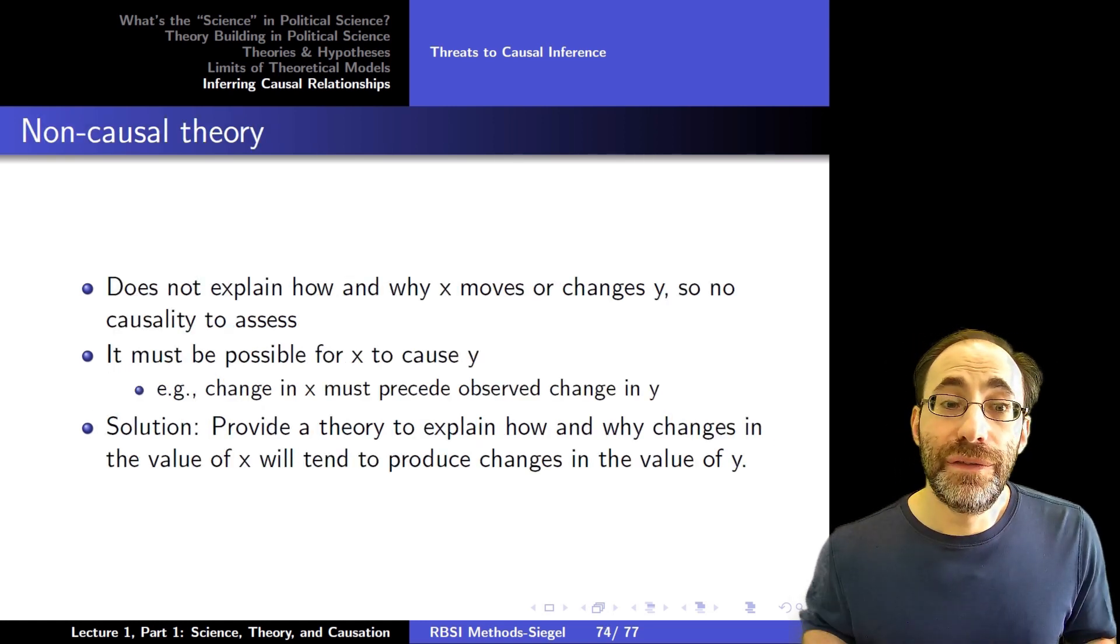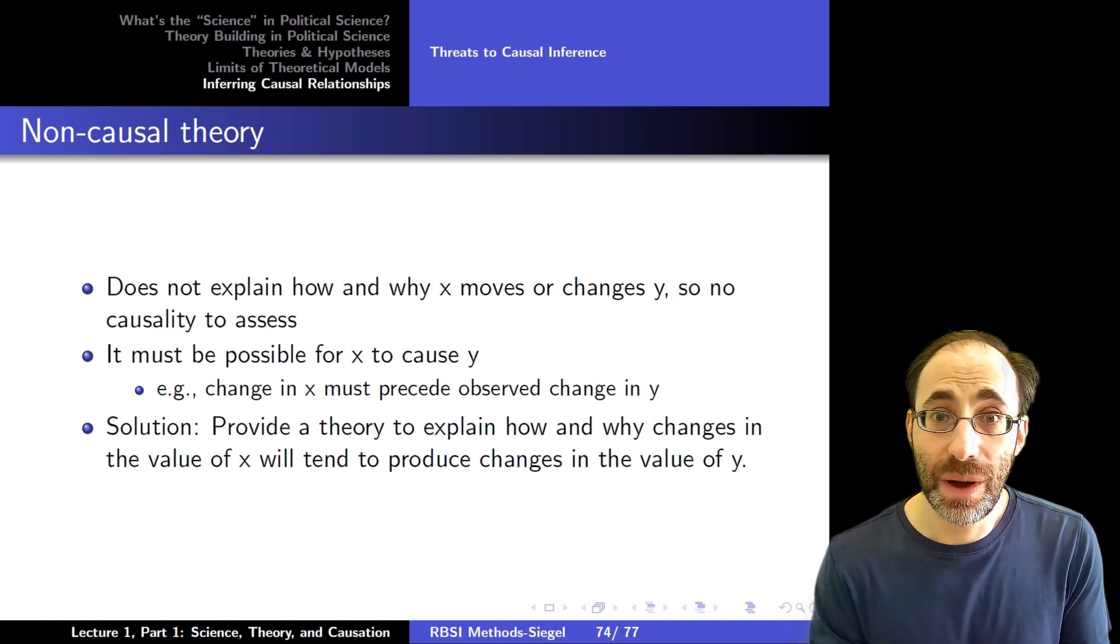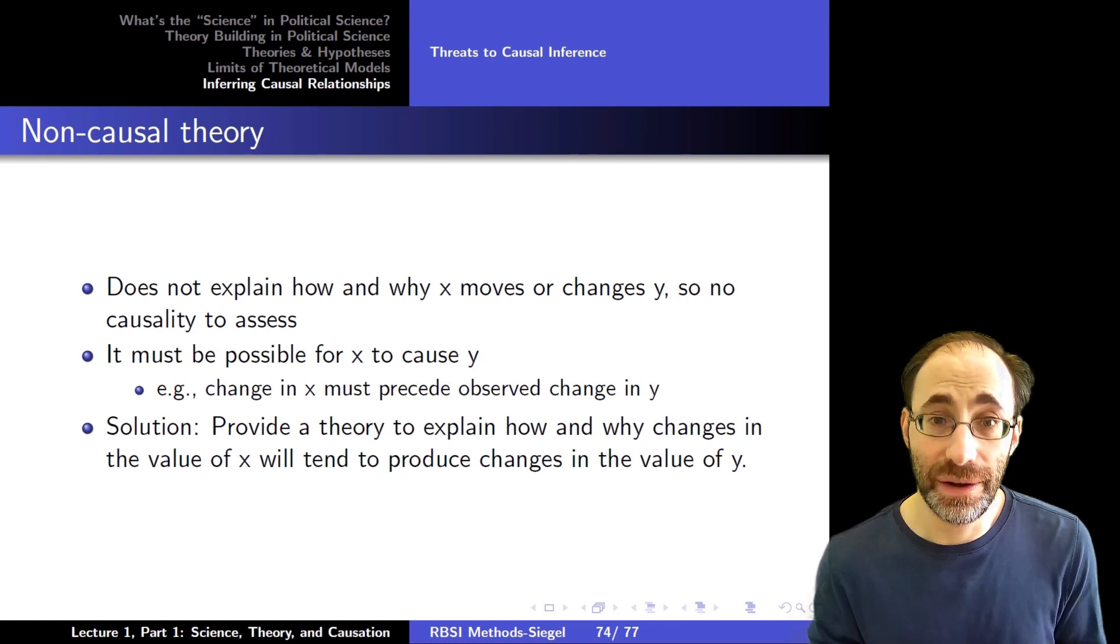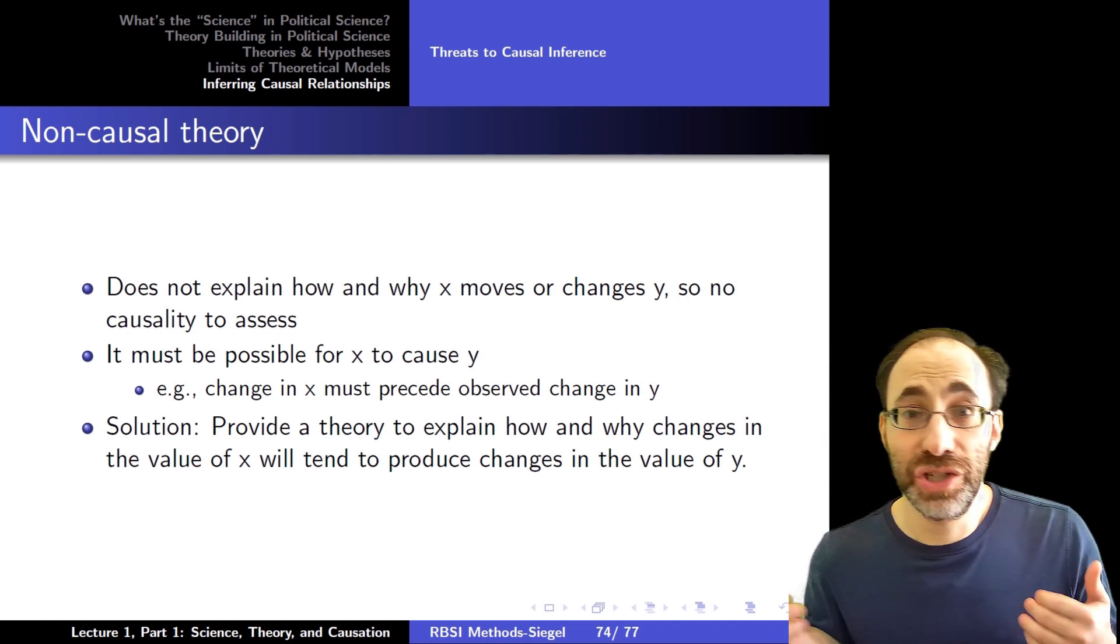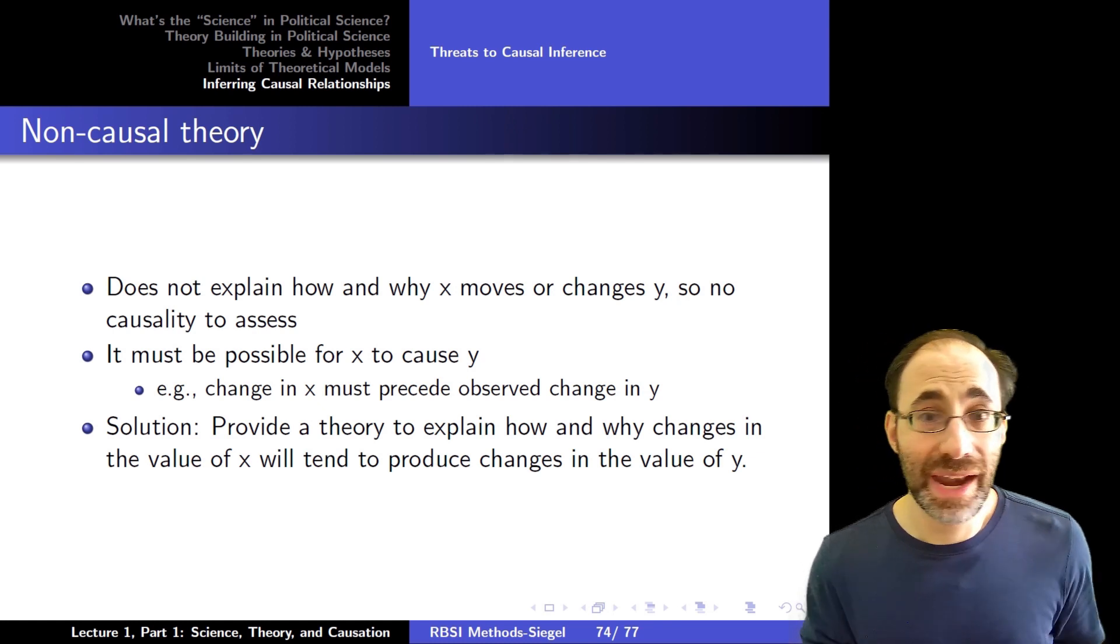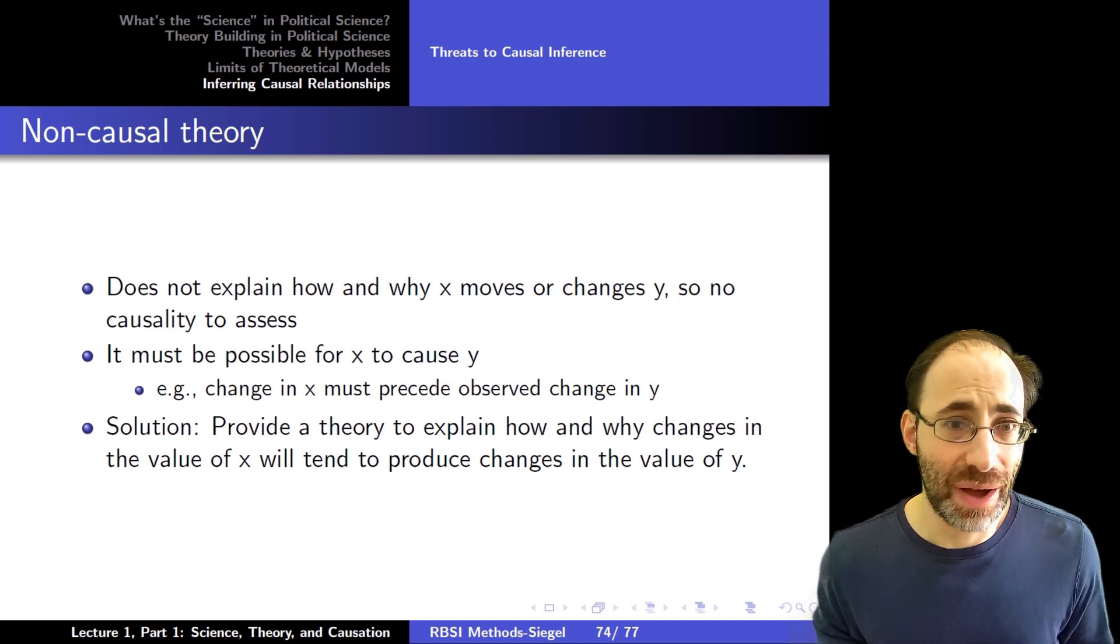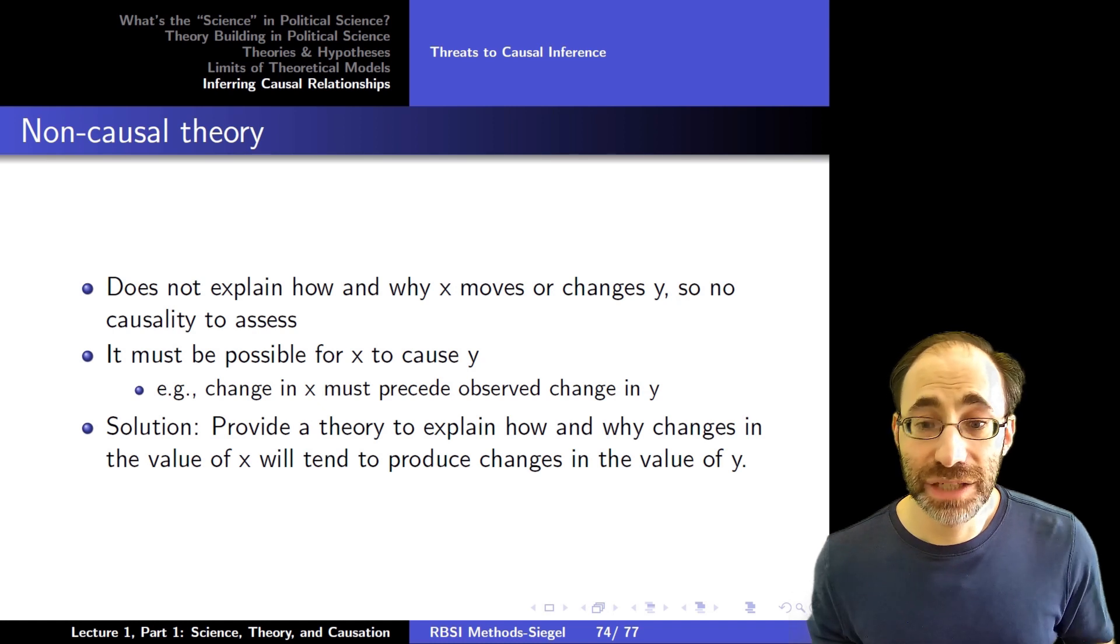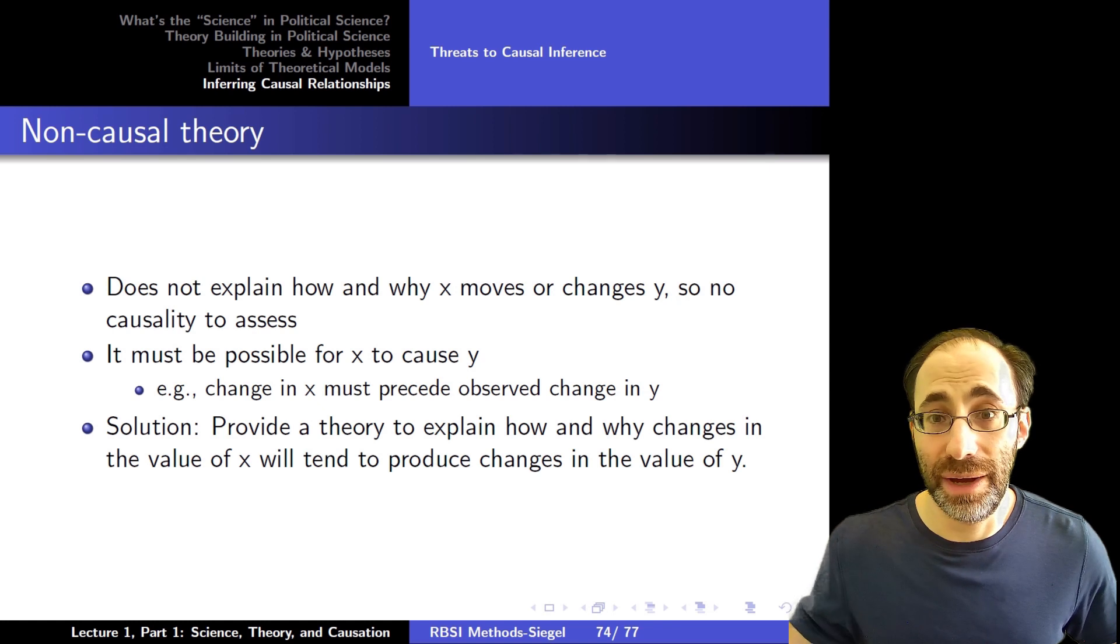So we'll deal with those in turn. First, a non-causal theory. As we said before, a non-causal theory does not explain how and why X moves or changes Y. So we can't assess causality at all. The theory must make it possible for X to cause Y. Which means the change in X we see in a theory must precede any observed change in Y. We can't have a situation in which X happens later, but somehow explains the earlier action of Y. We don't have time travel here. So the solution is to provide a theory that explains how and why changes in X tend to produce later changes in the value of Y.